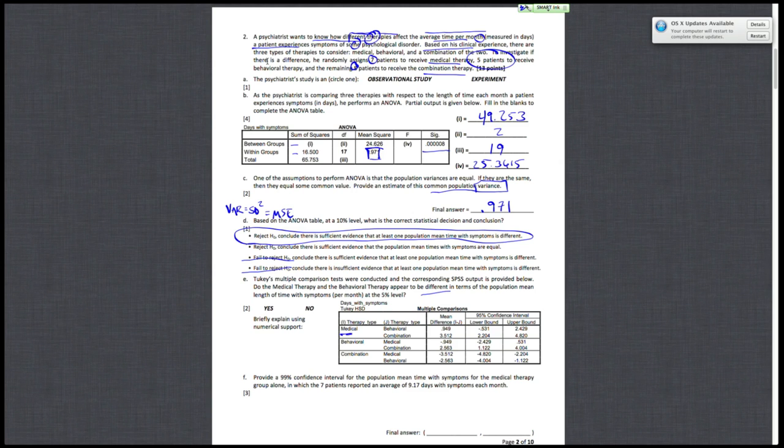Here's a confidence interval for medical versus behavioral, which means this is my confidence interval. Okay, notice that because it goes from a negative to a positive number, that zero is in the interval. And if zero is in the interval, that means it's possible there's no difference between those two means. So does it appear that they're different? No. And the reason why is because zero is in interval.